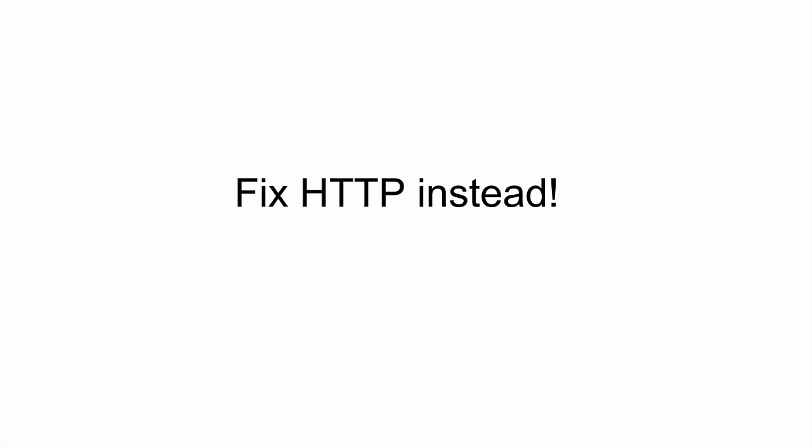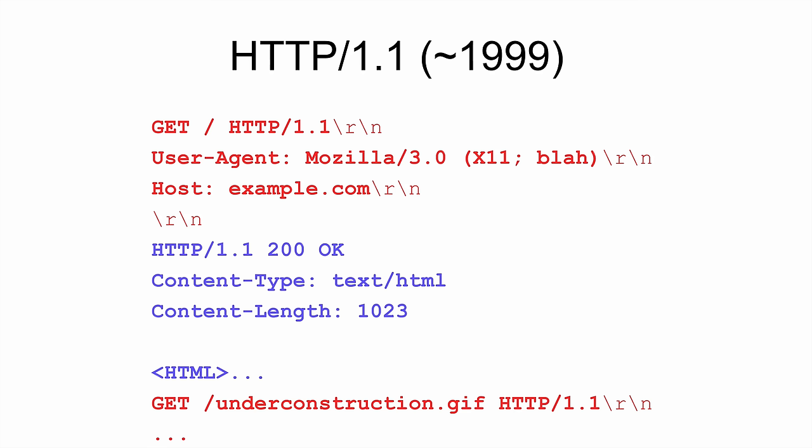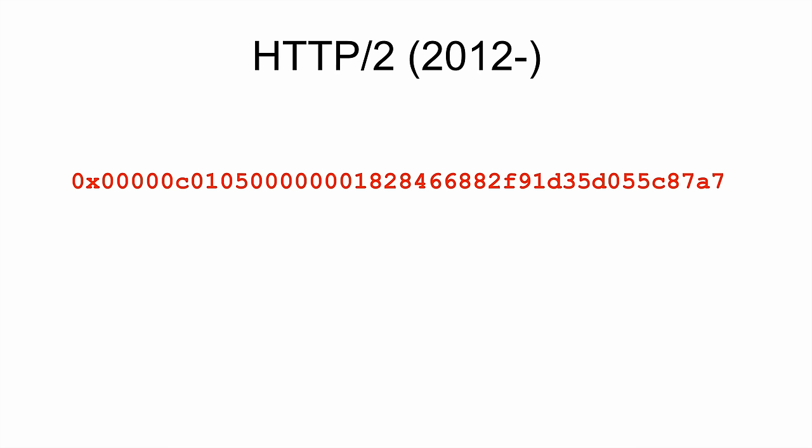People thought maybe we should just fix HTTP instead. Around 2009, Google had a browser and lots of servers, so people started experimenting with a protocol called SPDY. This became the basis of HTTP2. So if this is what a request looked like in 1989 — it's text, it's verbose — this is an HTTP2 request around 2012.